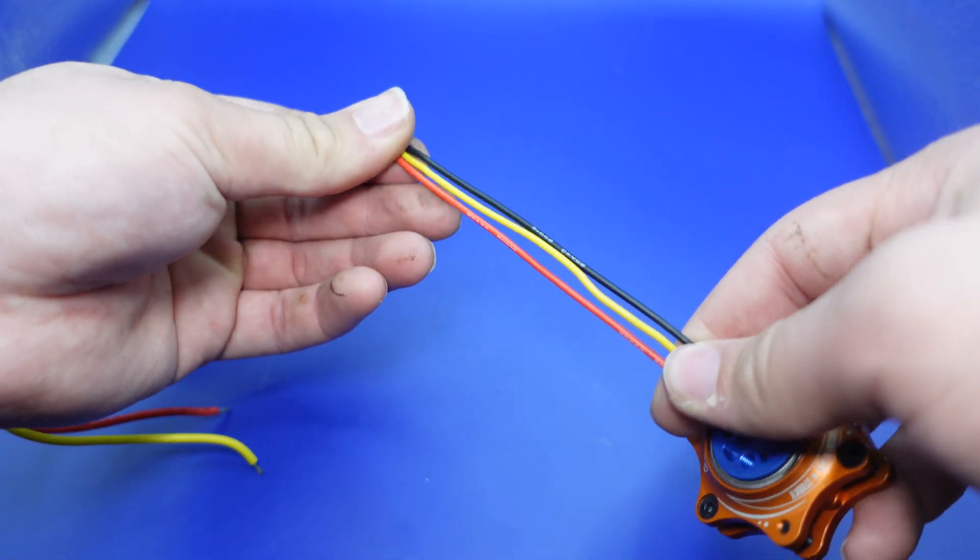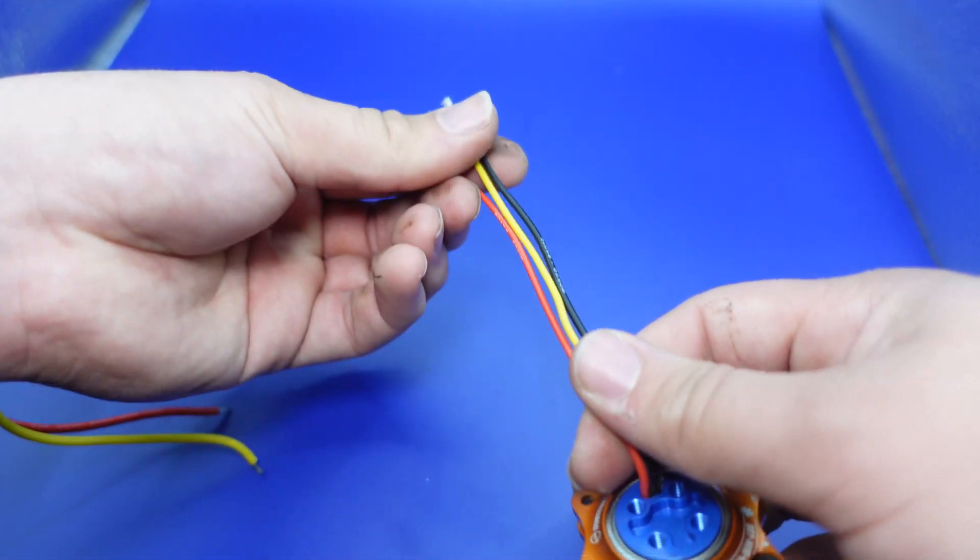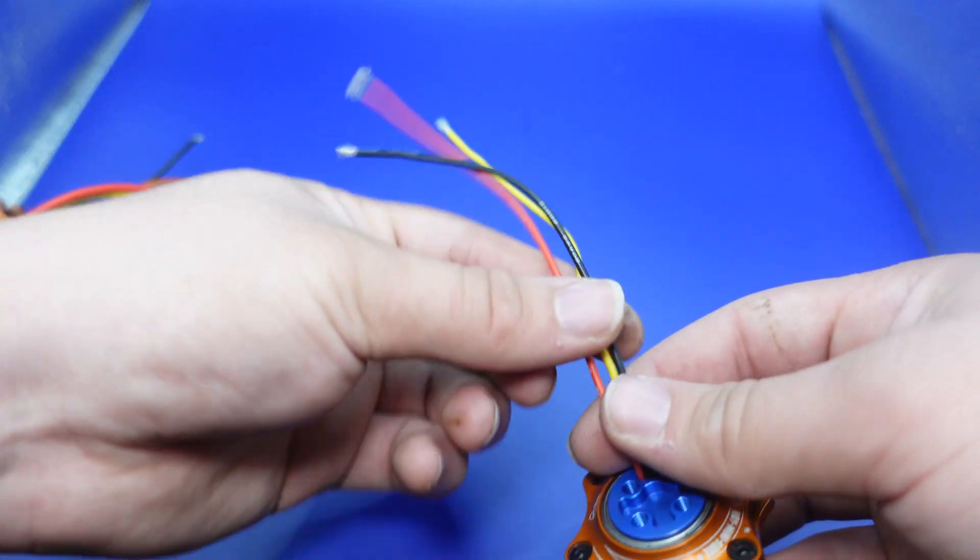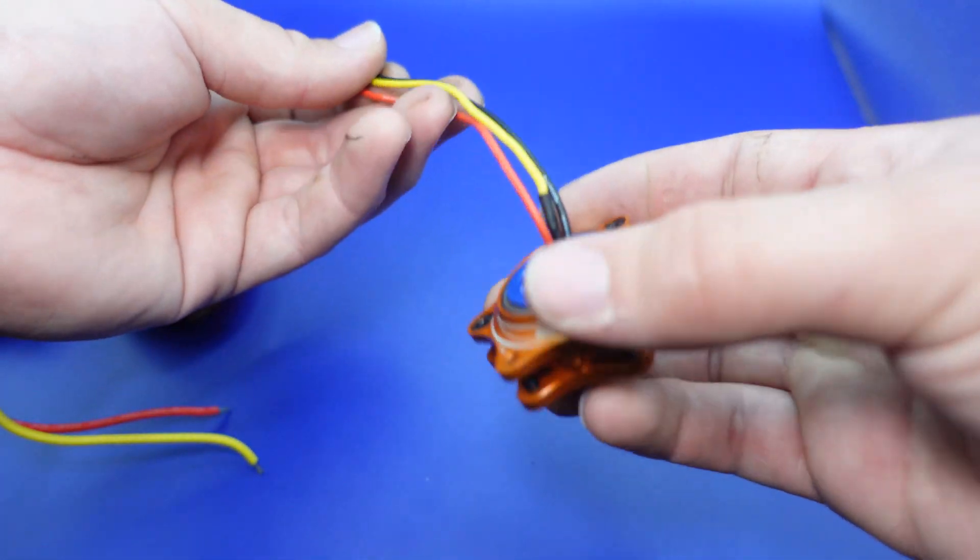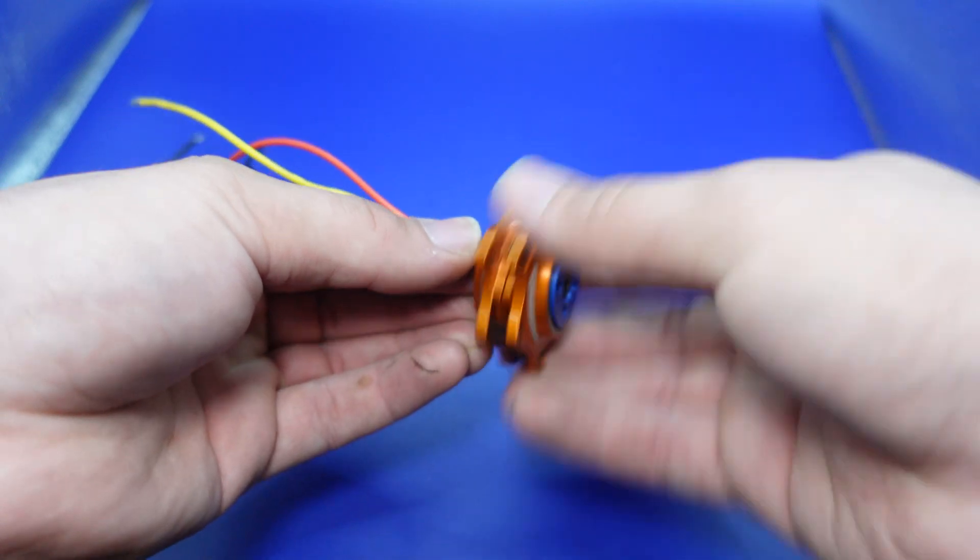These are silicone 18 gauge wires, and they're color-coded so that if you have a bunch of motors to wire up, you can wire them up all the same so they all spin the same direction. But of course the motor itself is capable of spinning in both directions just fine.